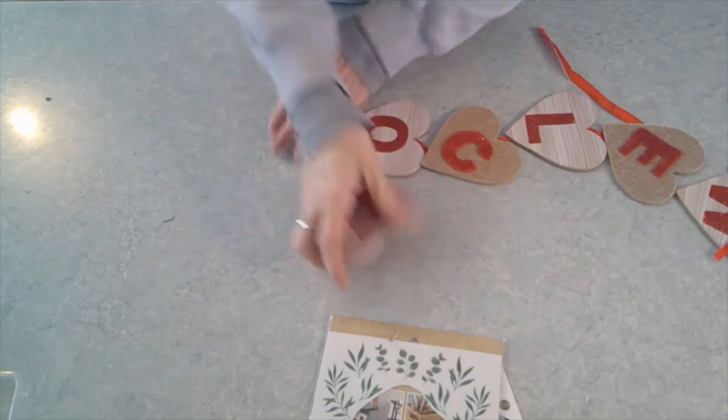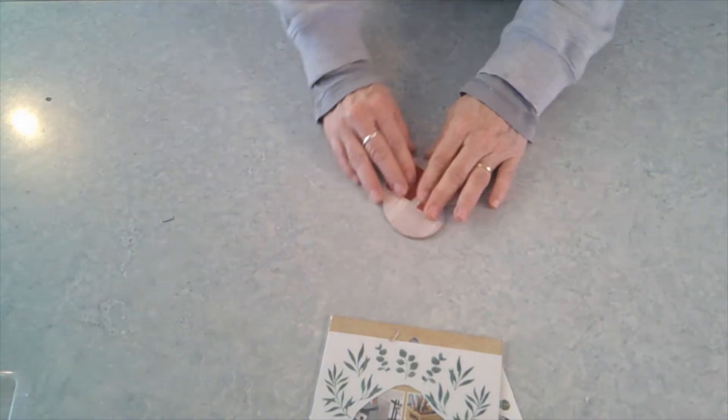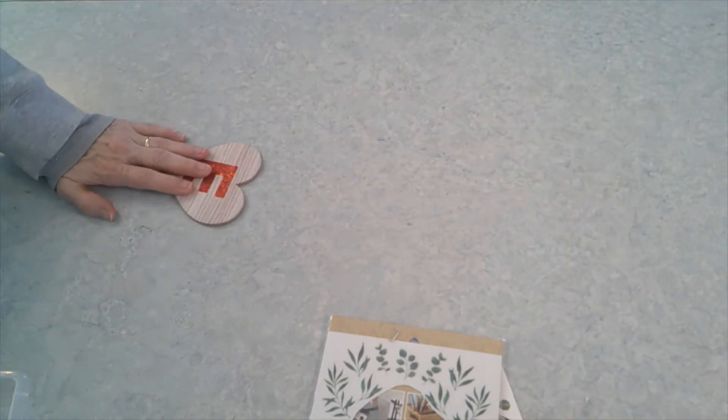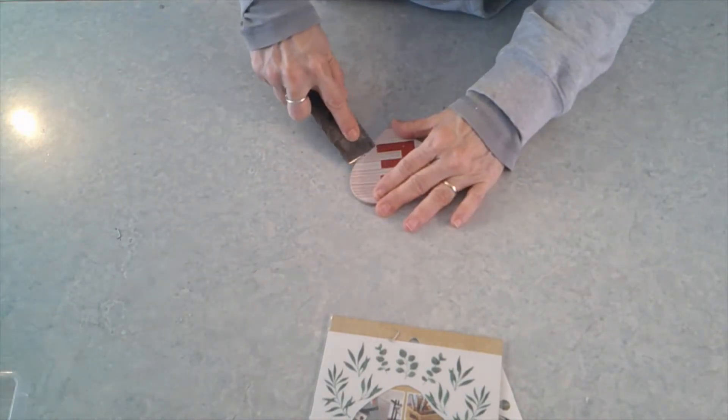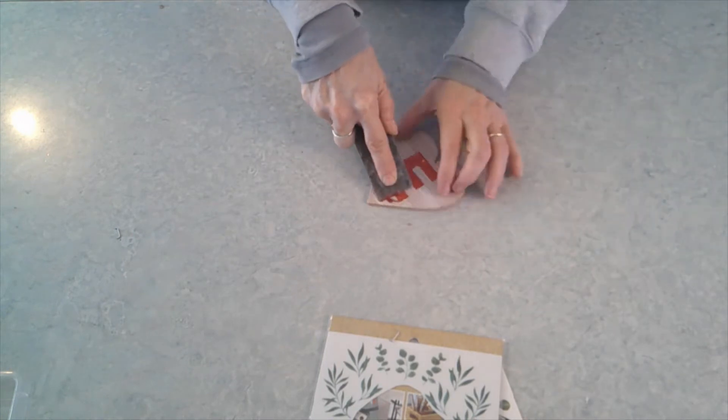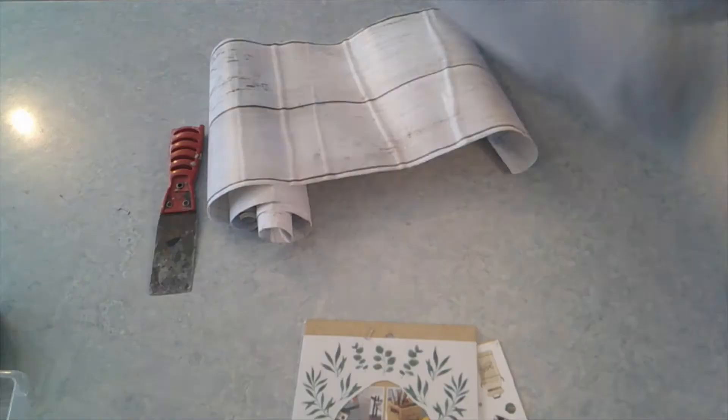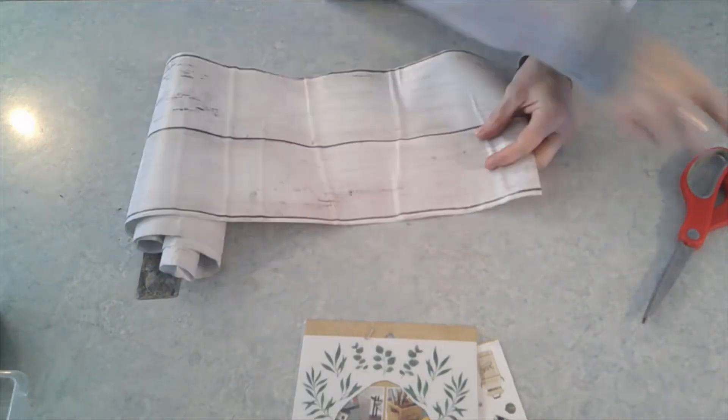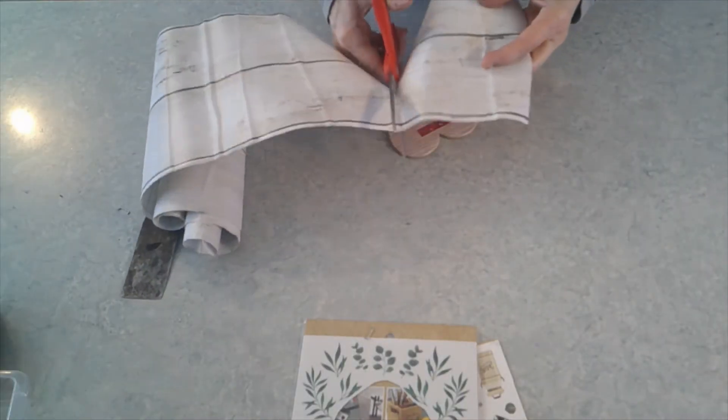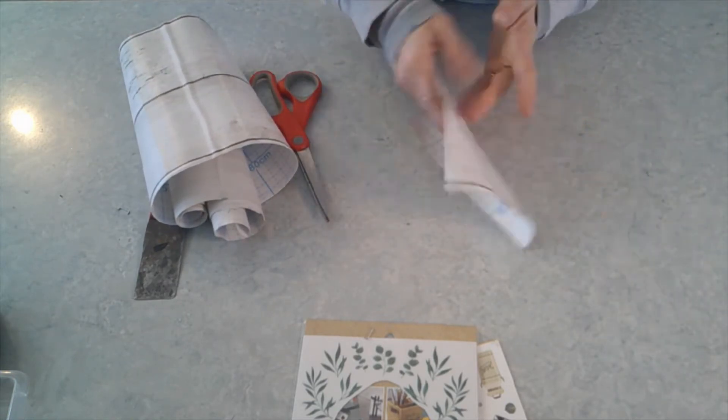For my first one today, I started with one of these welcome signs that has all those hearts stacked up. I scraped the glitter off one of those hearts. Then I used this contact paper that has a shiplap pattern on it, which I'm obsessed with. I just cut it to size and stuck it over the top of that heart.